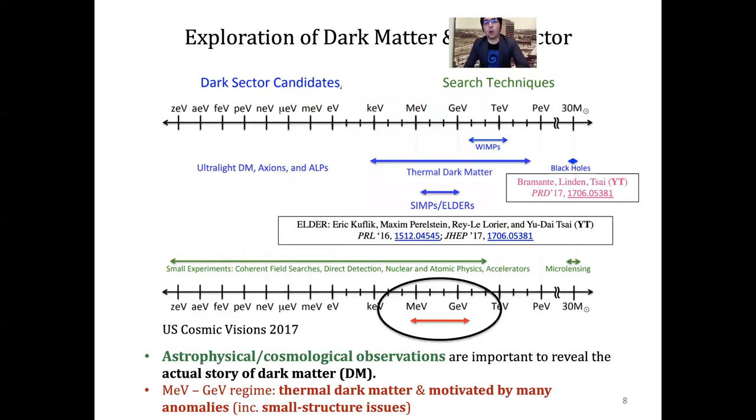There's all different kinds of dark matter models ranging from a wide range. But we can focus on MeV to GeV, because even though we don't know what dark matter mass is, this regime is the thermal dark matter regime. You can explain a lot of the anomalies and use dark matter to address this small scale structure problem or find constraints. This is a very interesting regime to look into.